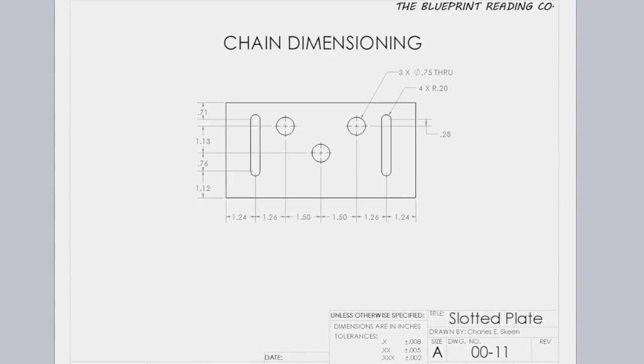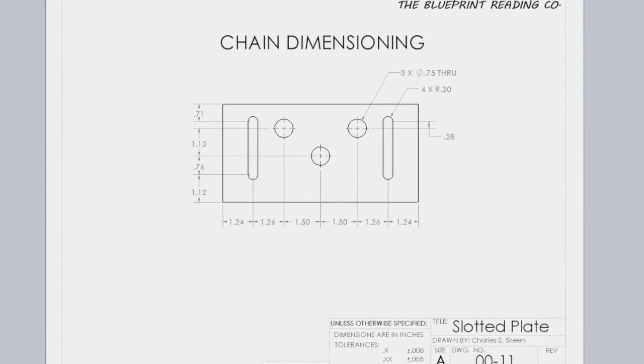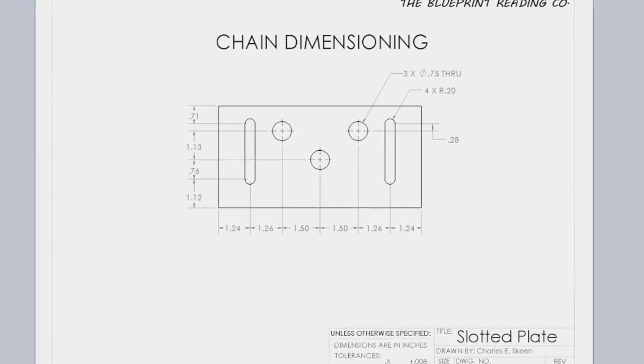There are several different dimensioning systems that you may see while reading blueprints. Chain dimensioning is a dimensioning system that dimensions from point to point.